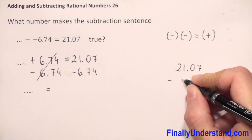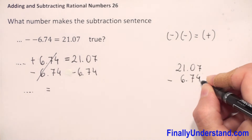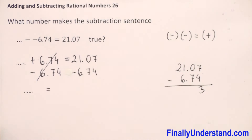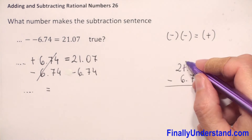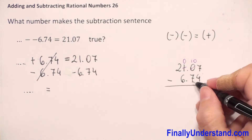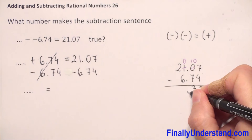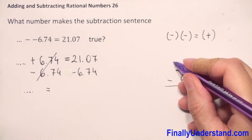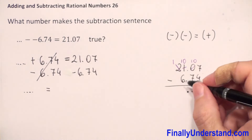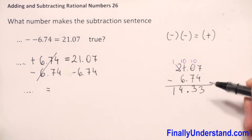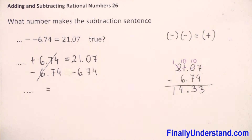We have subtraction of decimal numbers. 7 minus 4 is 3. Now we have 0 minus 7 — we cannot do that, so we borrow one from the next column, giving us 10. 10 minus 7 is 3. We copy the decimal point. 0 minus 6 — we cannot do that, so we borrow one from 2, making it 1, and we have 10. 10 minus 6 is 4.